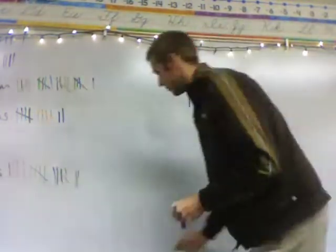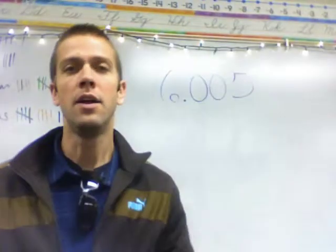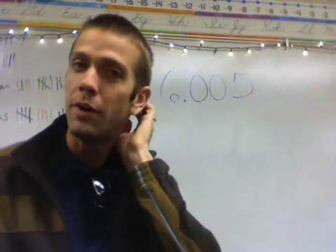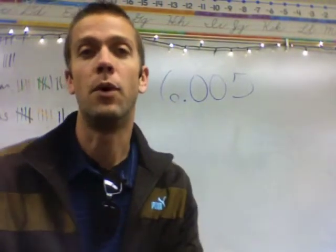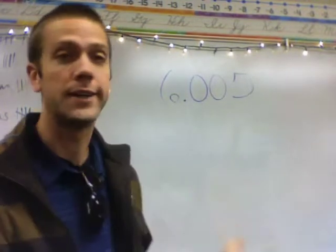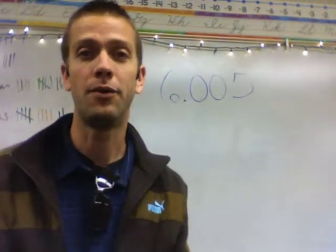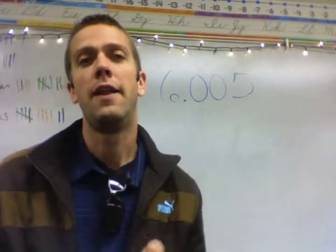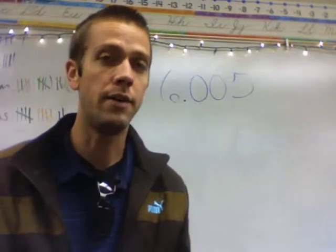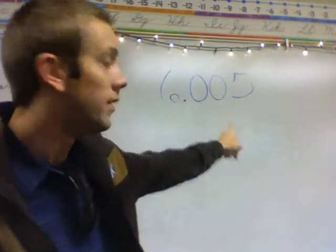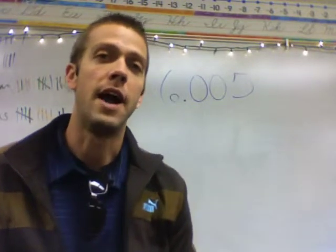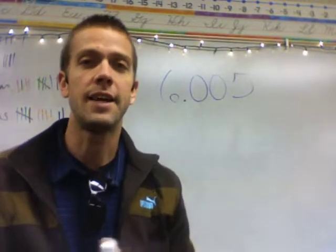Let's look at another number. Once again there's a decimal in this and you're going to want to read this just like you did before, kind of in three parts. First read the whole — six. Then the decimal stands for 'and,' and now you're going to read the number on the other side. Last time it was seven; this time it's five. But now where is it at? So six and five...